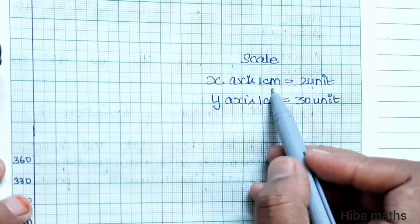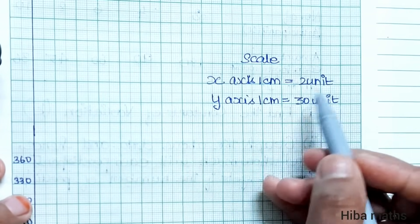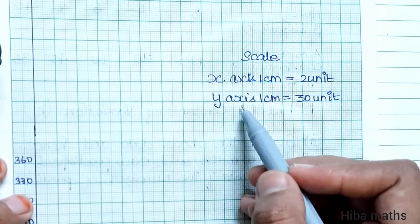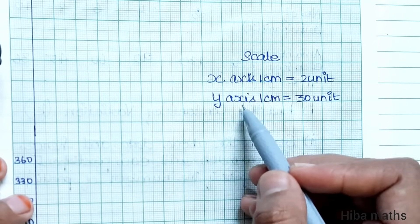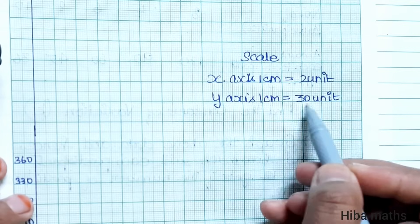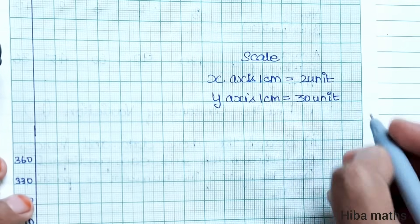For the graph, the x-axis scale is 1 cm equal to 2 units, and the y-axis scale is 1 cm equal to 30 units. Now we plot the points from the table.